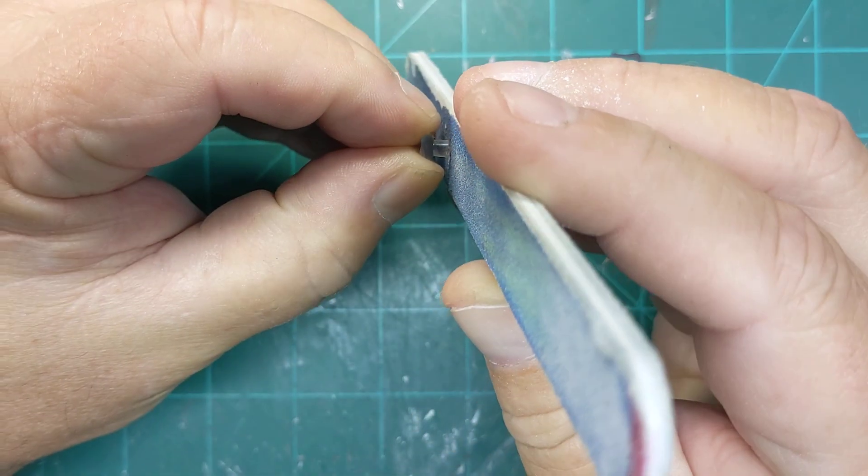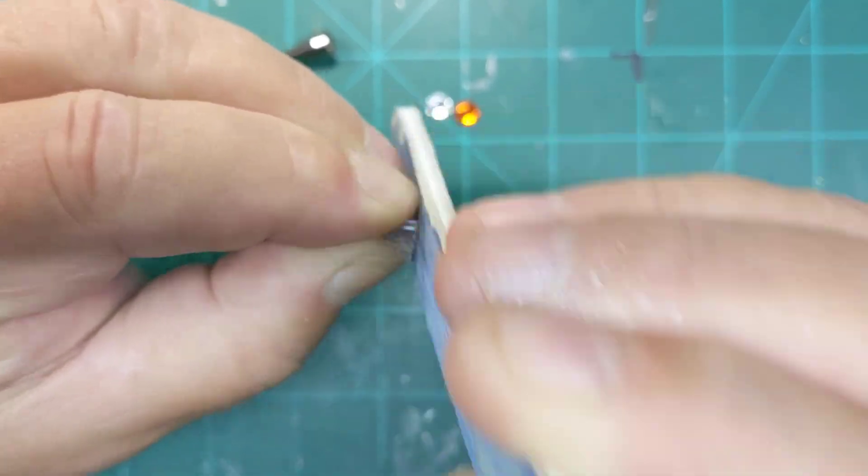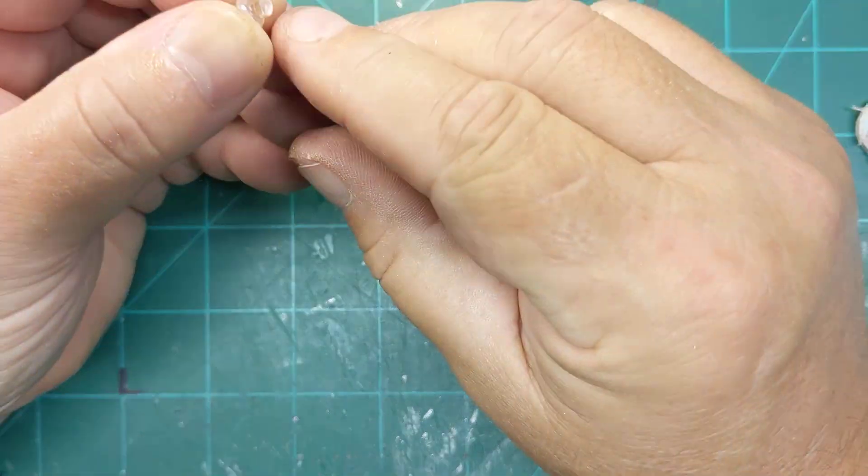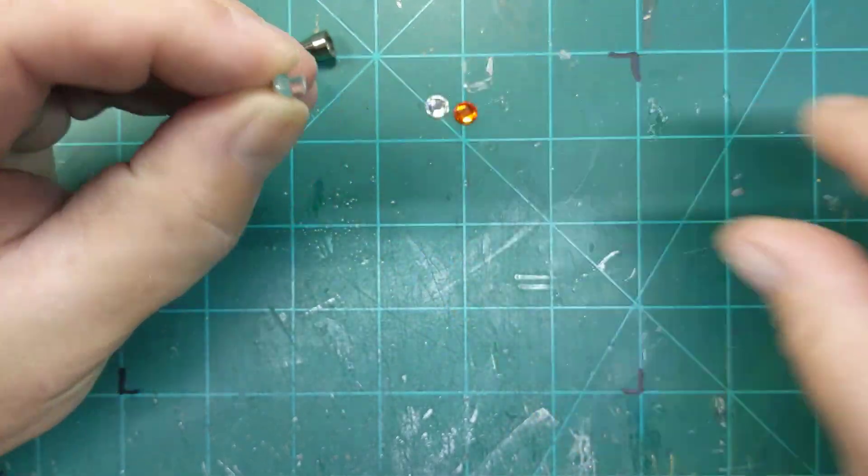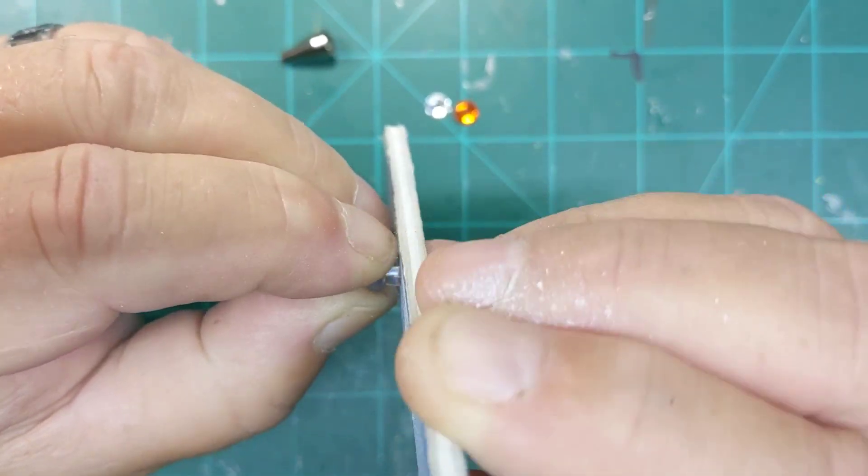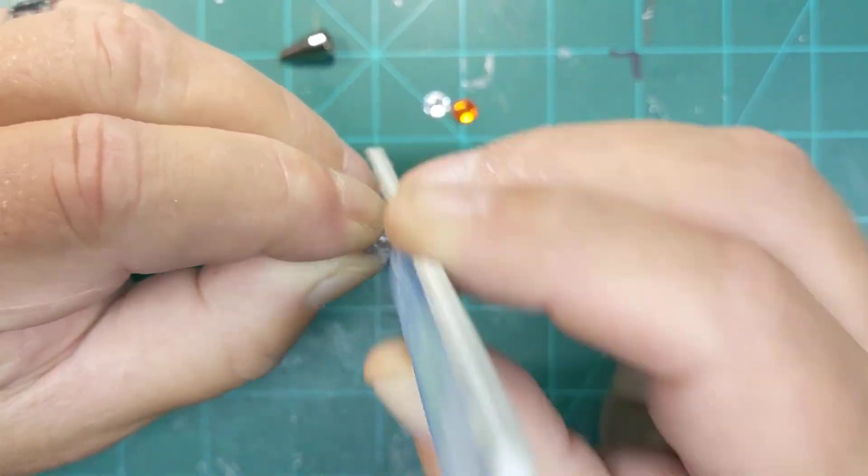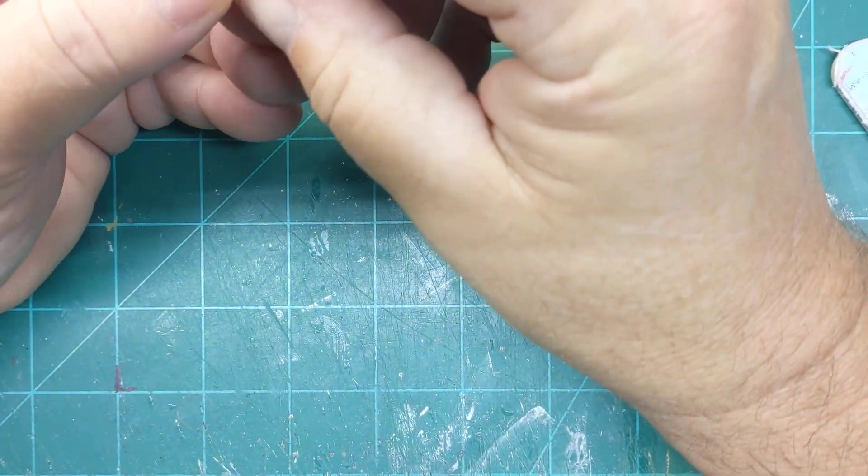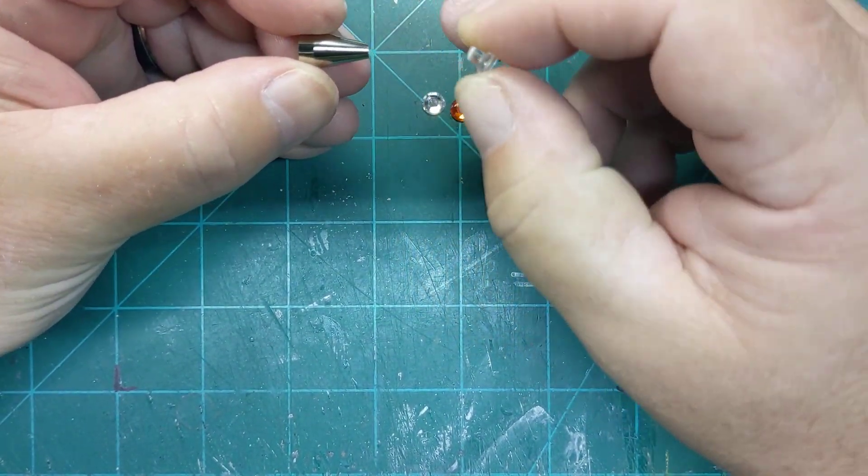Kind of hard to do right here with the camera in the way, but we just want a little angle. Don't really know what kind of angle I'm getting, but we just want a little angle. The reason why you want an angle is because of the taper on the end of the ink pen.